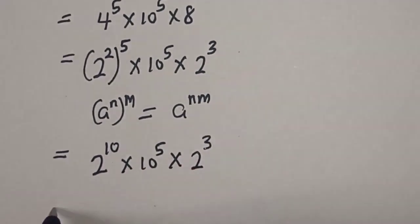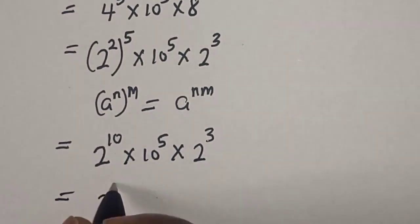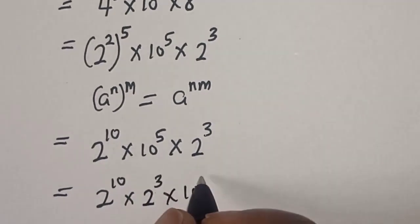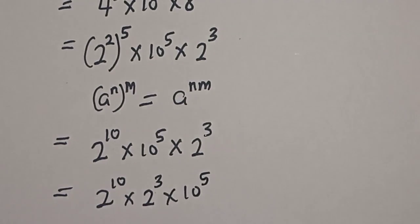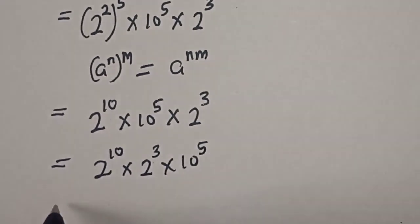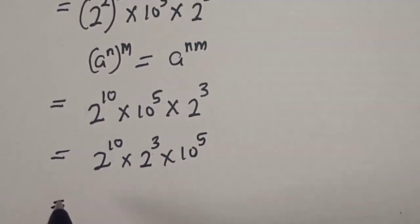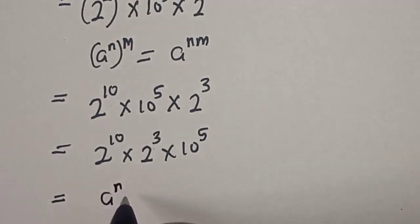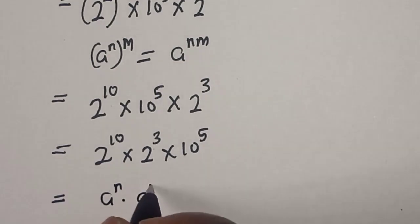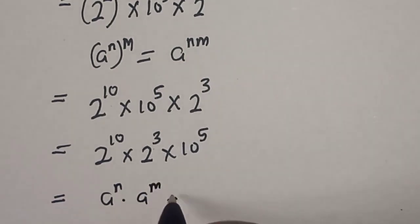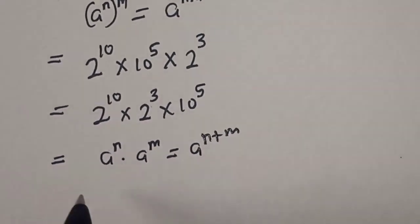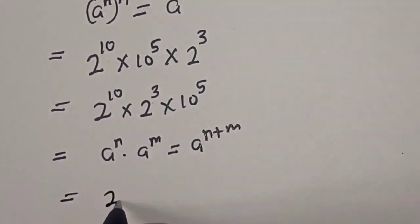Now if you rearrange, we have 2 to the power of 10 multiplied by 2 to the power of 3, multiplied by 10 raised to the power 5. Also take note of this rule: if you have a raised to the power n multiplied by a raised to the power m, this is equal to a raised to the power n plus m.